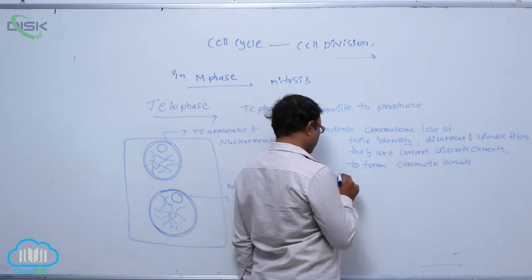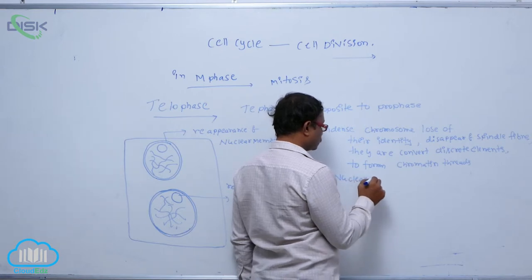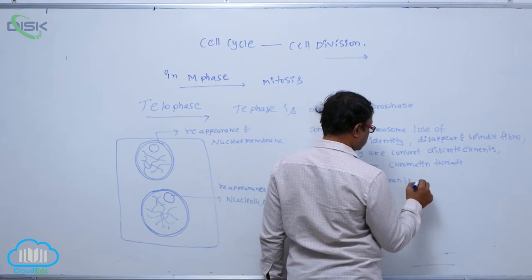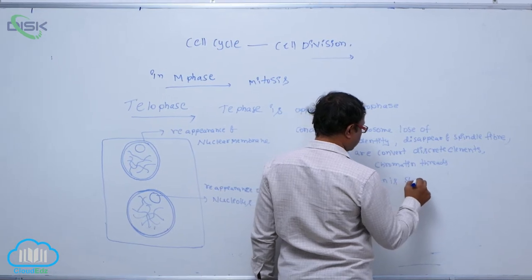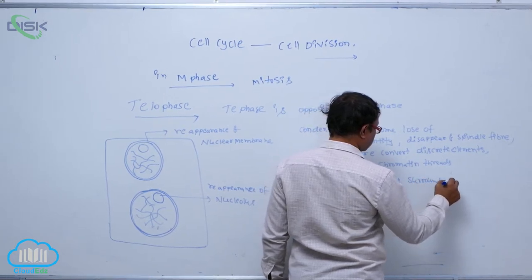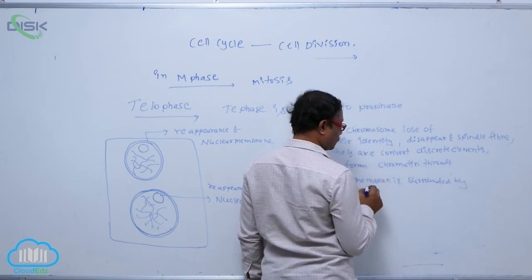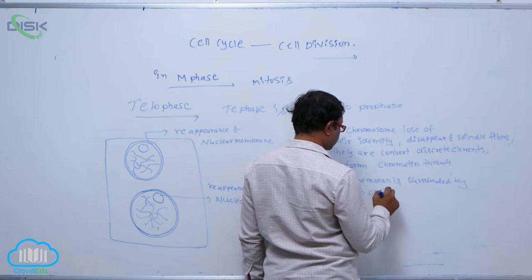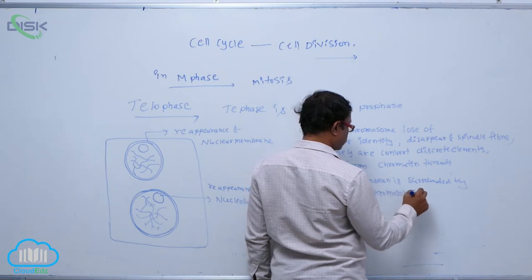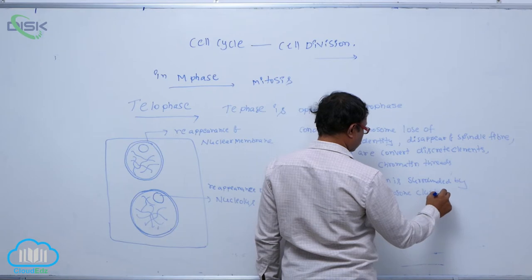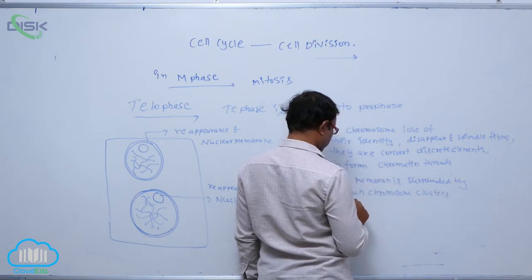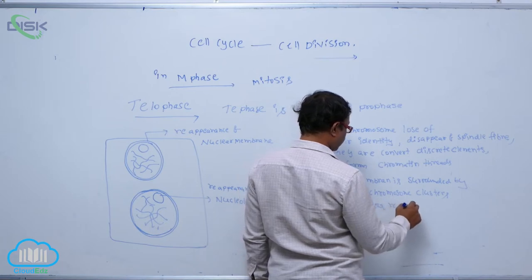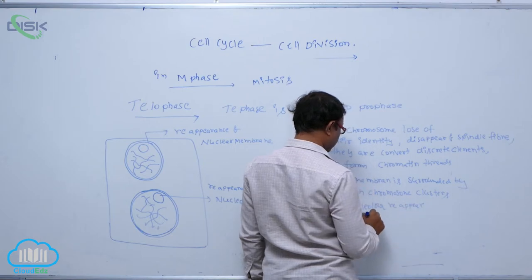Nuclear membrane is surrounded by each chromosome cluster. Nucleolus reappears and cell organelles are formed.